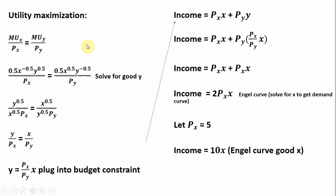Next, we set up the utility maximization condition, where the marginal utility per dollar is equal across both goods. Taking the marginal utility of good X, dividing it by the price of good X (P subscript X), and doing the same for good Y.